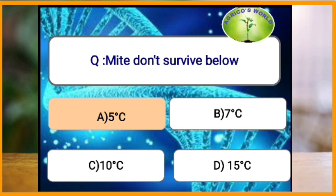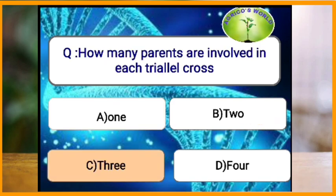The first photosynthetic organism on earth was cyanobacteria. Mites do not survive below which temperature? Mites do not survive below 5 degrees centigrade. Insects do not survive below 15 degrees centigrade, and storage fungi do not survive below 0 degrees centigrade.